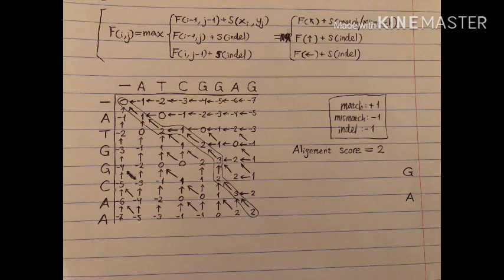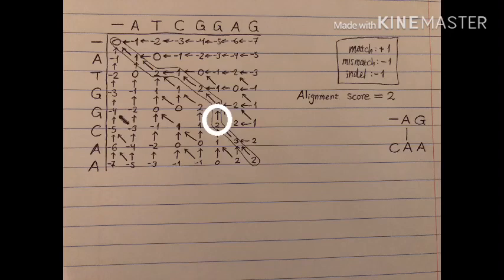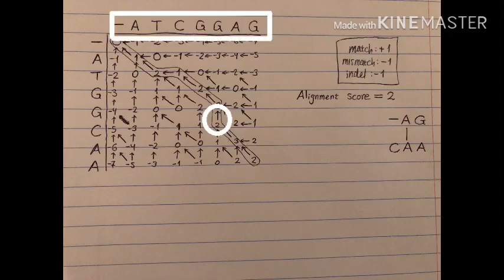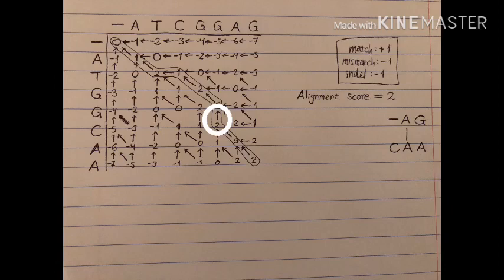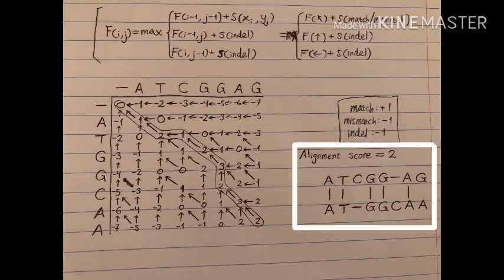Then we start the actual alignment from the right side. Since the arrow out of the two is diagonal, we either have a match or mismatch, so we write both nucleotides against each other. The next step has a diagonal arrow too, meaning we again write two nucleotides — this time they match, so we write a line between them. The next number has an arrow pointing up, indicating an indel. To determine which strand has the indel, we look at which strand makes no progress when moving along the arrow — that strand gets a dash instead of a letter. We continue to the end to get our total global alignment. If there were more than one path, we would also have more than one alignment.